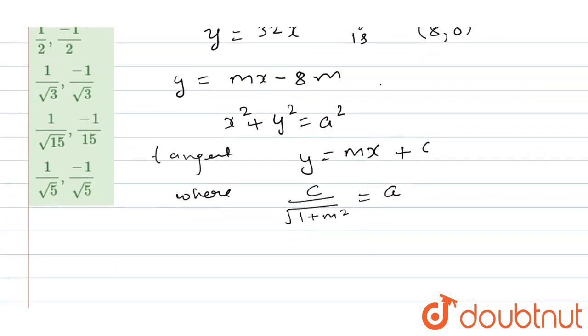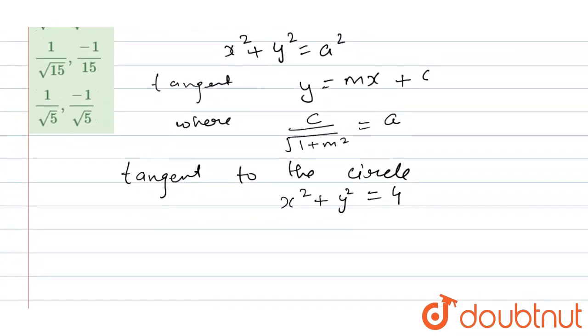We know the tangent to the circle x² + y² = 4. Here a² = 4, so a = 2. Putting these values, we get 8m divided by √(1 + m²) equals 2.